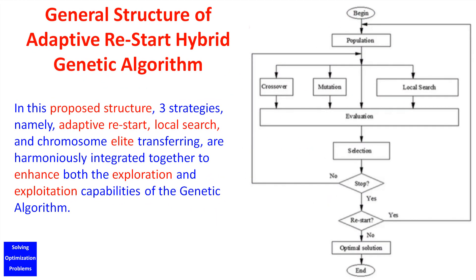Genetic algorithm is one of the most general global optimization solution methods, used in countless numbers of research publications. However, like other search techniques, genetic algorithm has a weak theoretical guarantee of global optimal solution and can only offer a probabilistic guarantee. Having a genetic algorithm capable of searching for the global optimal solution with very high success probability is always desirable.